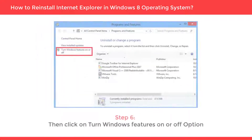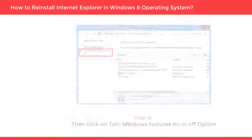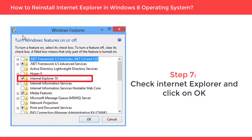Step 6: Then click on Turn Windows Features On or Off option. Step 7: Check Internet Explorer and click on OK.